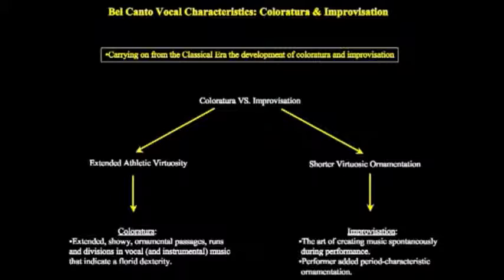Whereas ornamentation is improvisation — the art of creating music spontaneously during the performance. The performer adds period-characteristic ornamentation, something the composer does not write out, something created on the spot that is generally much shorter. So with coloratura, it's written out and it's longer. With ornamentation, it's done on the spot and it's not written out.